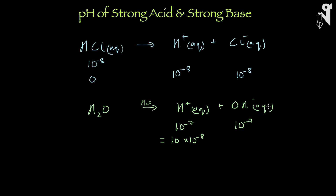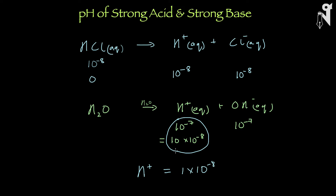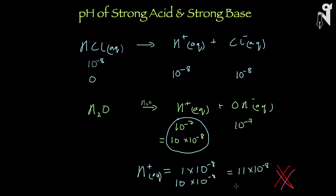So, can I say H⁺ equals 1 × 10⁻⁸ from HCl plus 10 to the power minus 7 from water, which is 10 × 10⁻⁸, giving 11 × 10⁻⁸? I hope you see that the answer is no, it is not 11 × 10⁻⁸. You have to consider the common ion effect — this H⁺ ion has been provided to water by HCl.